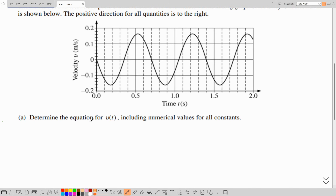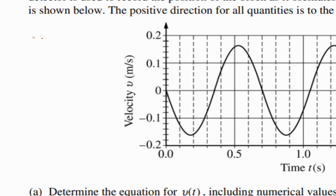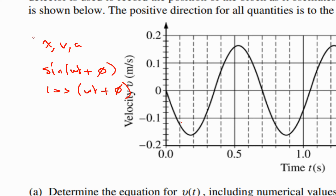In part A we need to determine the equation for v(t), including numerical values for all constants. In oscillatory motion, any variable of motion — whether x, v, or a — is modeled by either a sine or cosine function. Looking carefully at the velocity, because we start from the origin it can be modeled by a sine function, but it's flipped. Because we start from 0 exactly as the sine function, the initial phase difference would be 0.